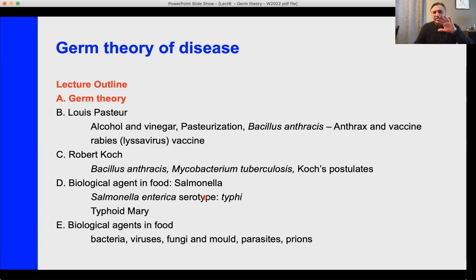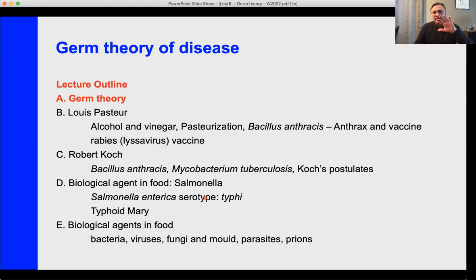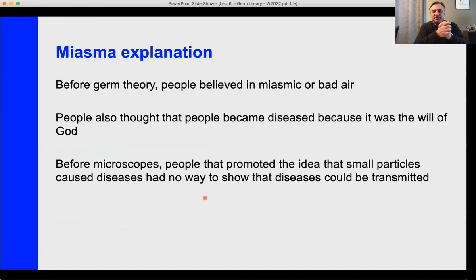So here's the lecture outline. I'm talking about germ theory, Louis Pasteur, Robert Koch, Salmonella, and biological agents in food. The germ theory — I often talk about the word miasma. When I talk about miasma, I'm talking about the definition of miasma being bad air. At one point in time, it was thought that people got sick because they ingested or inhaled some bad air — if you walked through a swamp, or places in cities where you could smell rot or animal droppings. People thought that bad air caused disease.